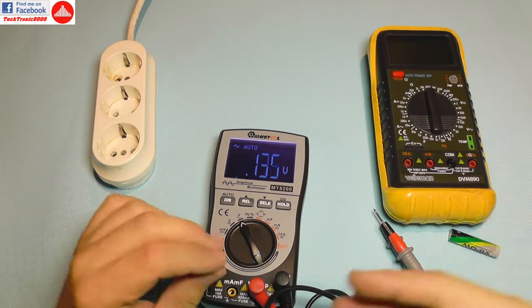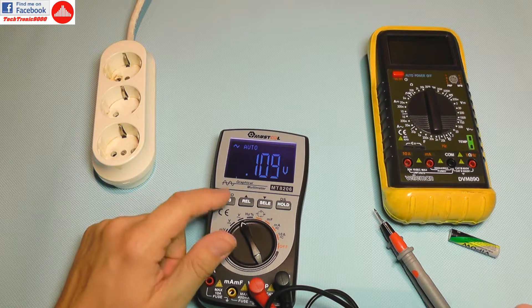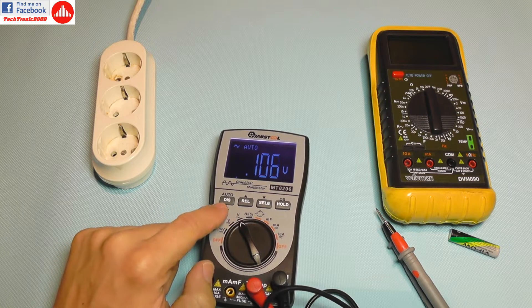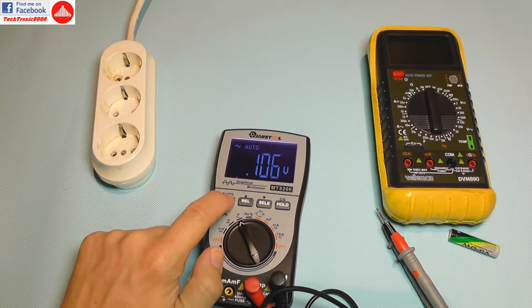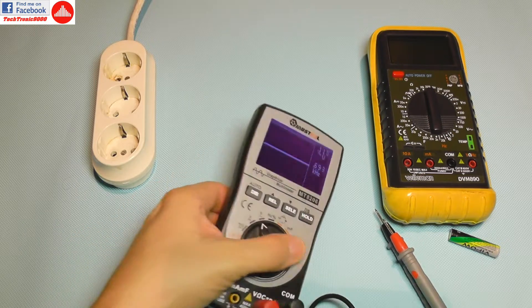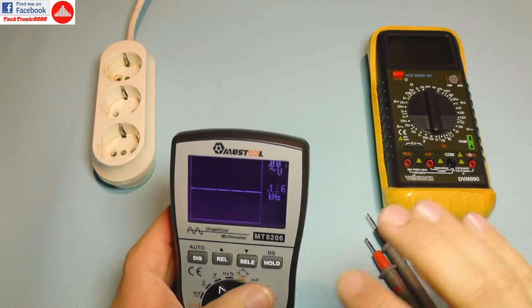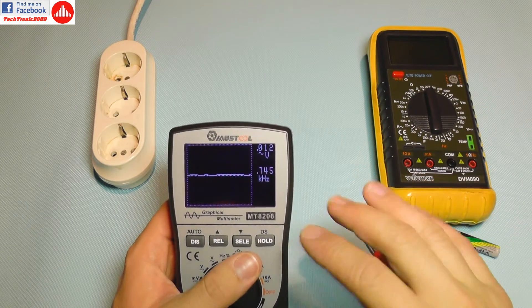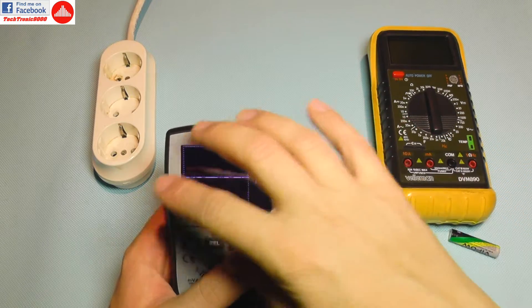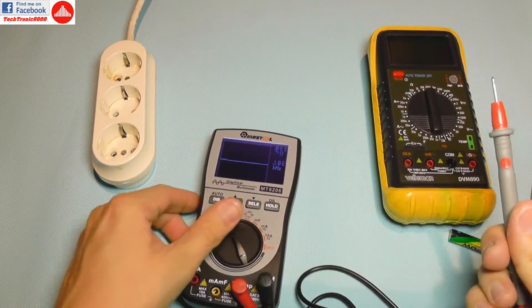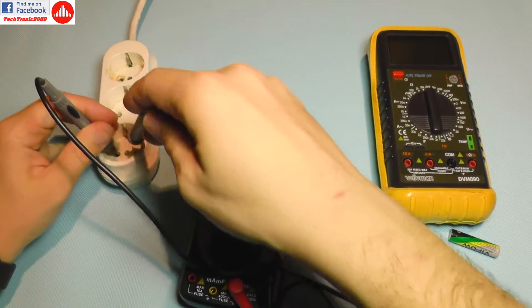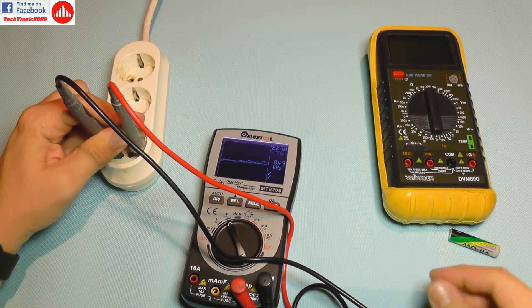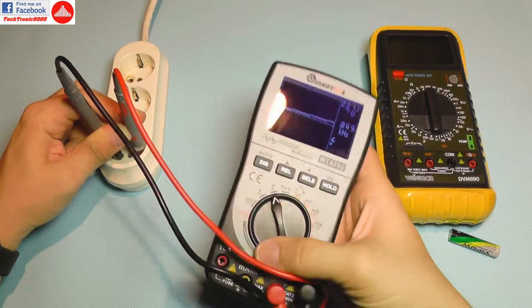But I want to make this an oscilloscope and go into graphics mode. So you keep this auto button pressed for two seconds and now I'm in oscilloscope mode. This is again full range, automatic range, so it will automatically detect voltage and frequency and adjust the graphic automatically. I'm going to plug this again into the mains and there you go.